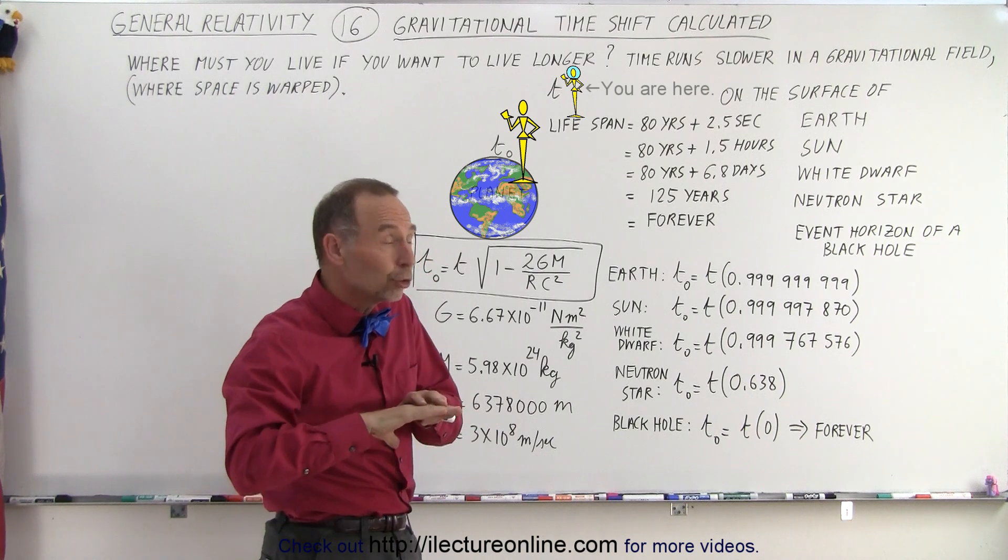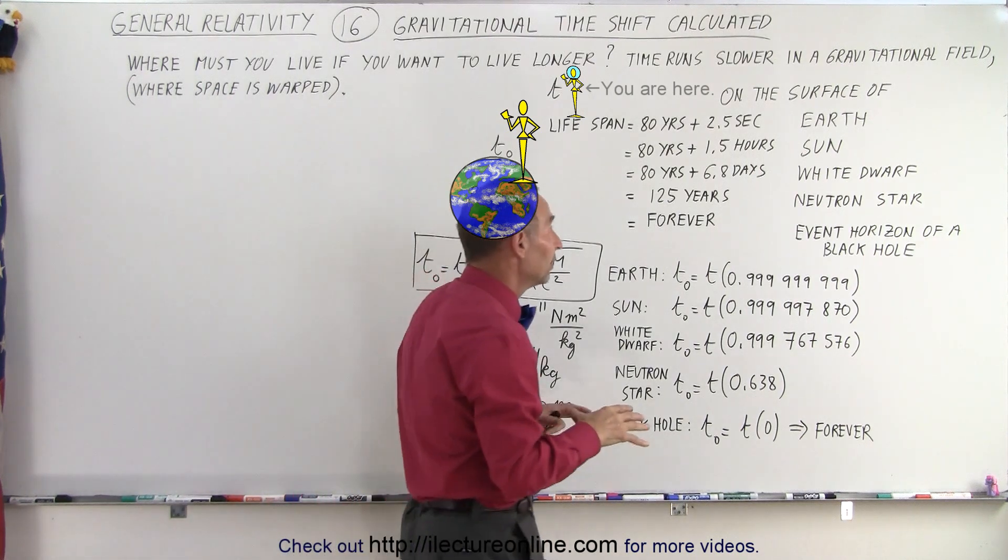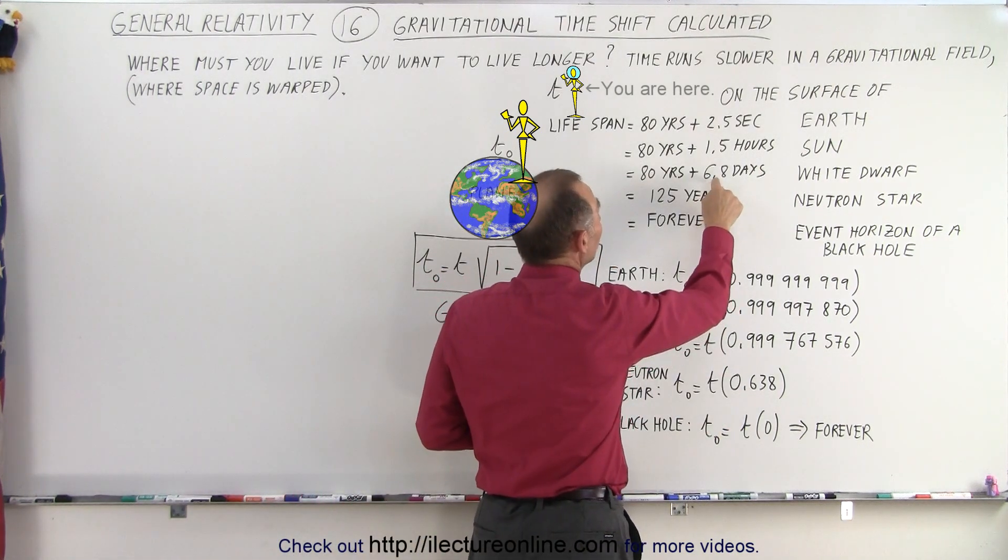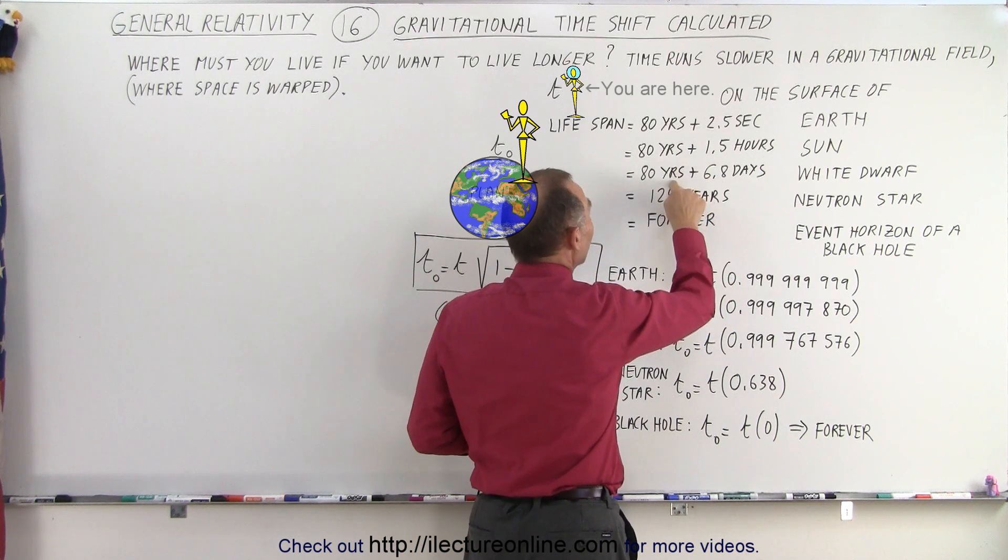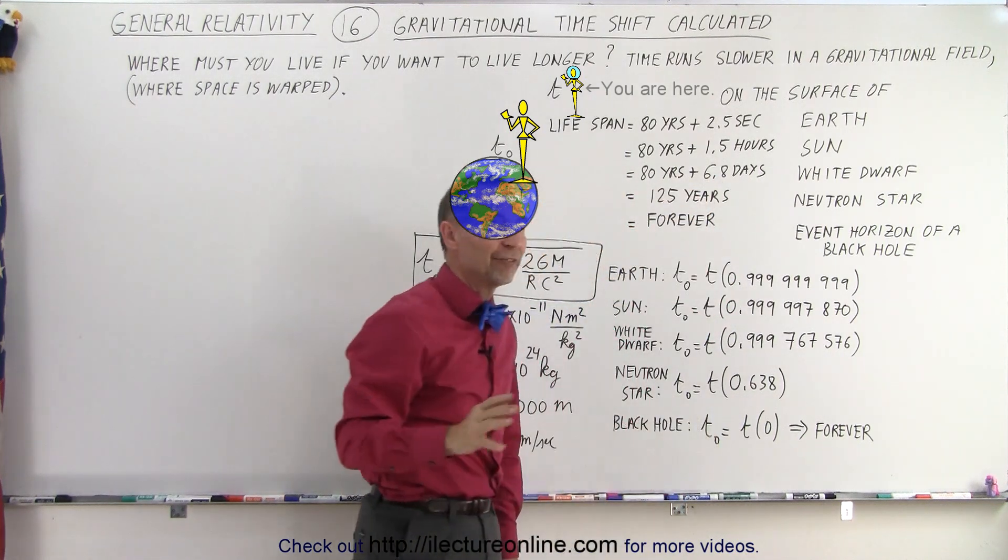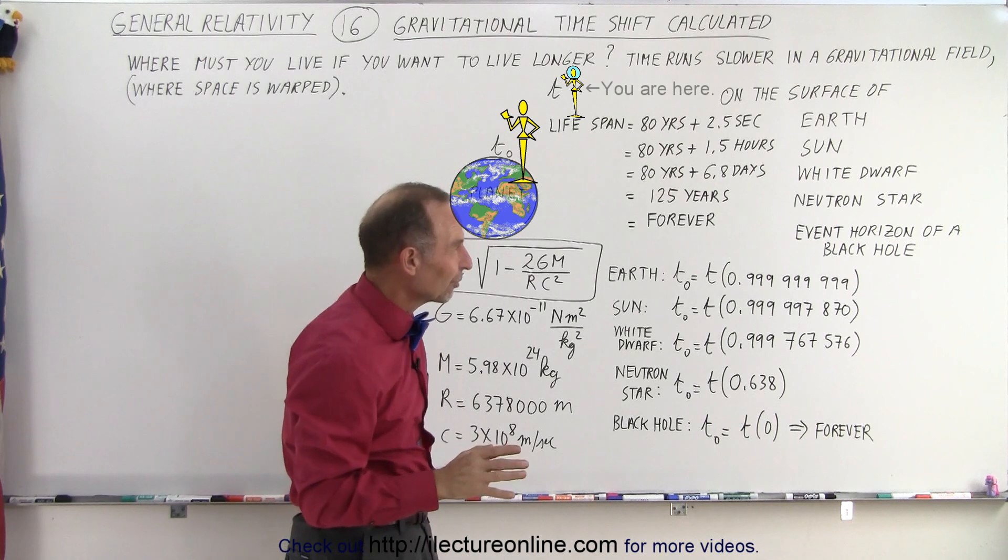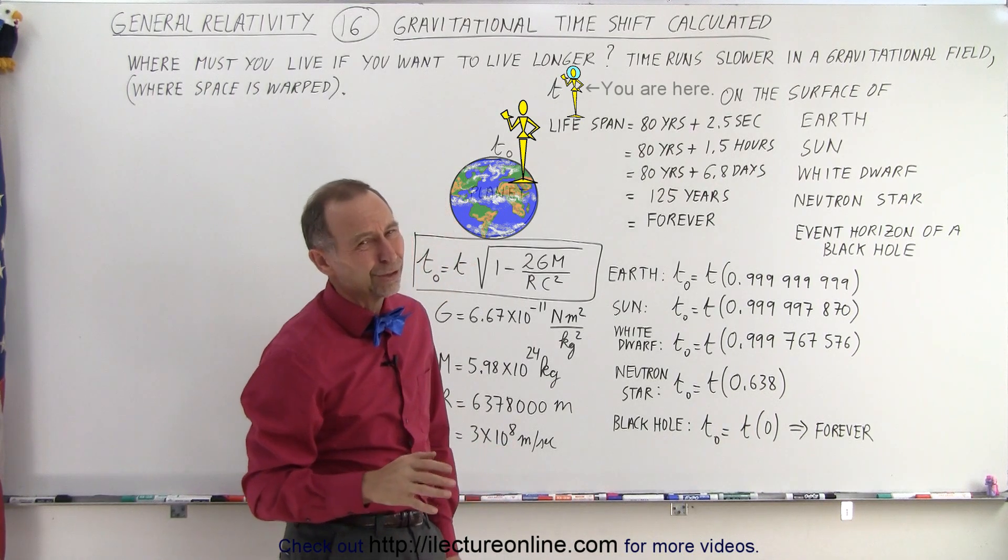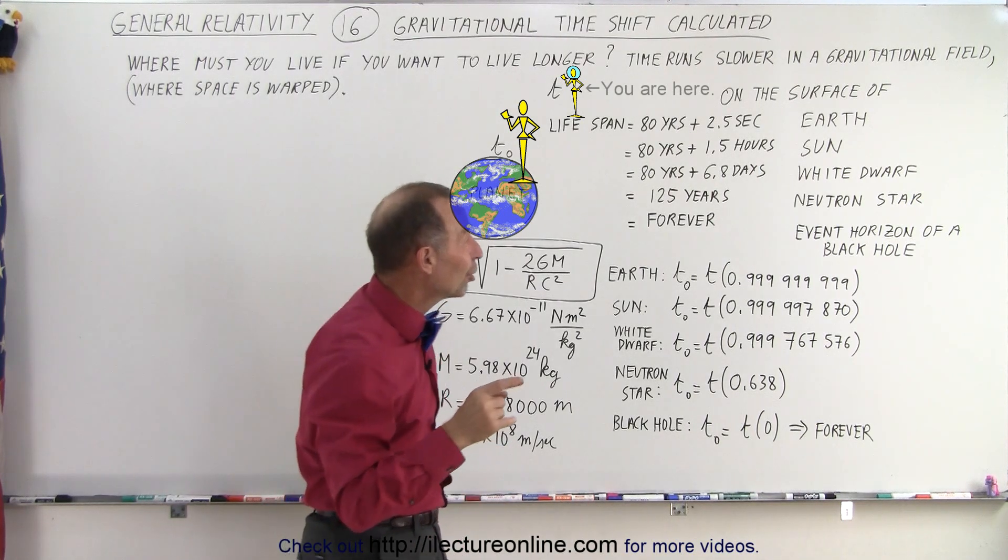If you could go live on a white dwarf, then you could live for an additional 6.8 days relative to the 80-year span, and finally, the place to go is a neutron star. Well, of course, you could live in a neutron star, but if you could,